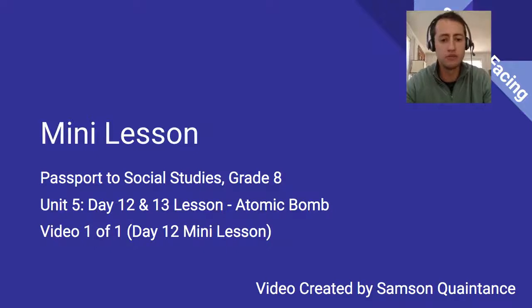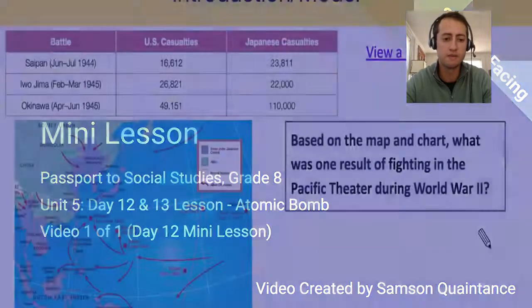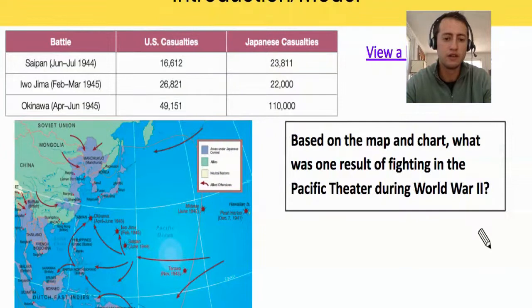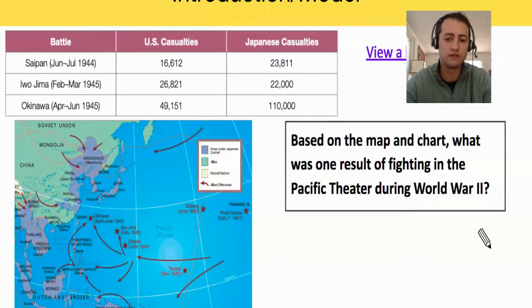In this video, I'm going to do a little mini lesson for the beginning of day 12 — the atomic bombs. First, let's go over the chart and graph where you can answer the question: what was one result of fighting in the Pacific Theater during World War II?